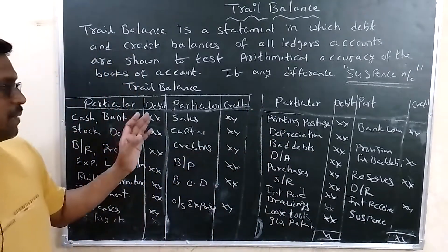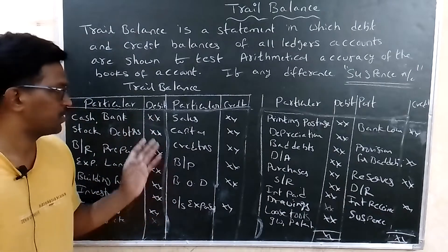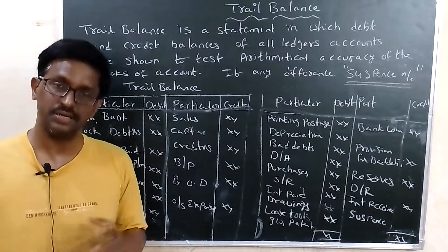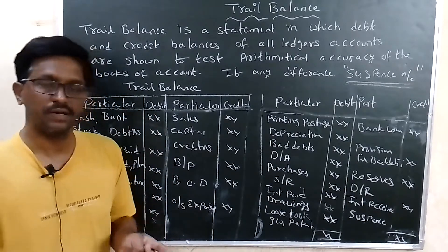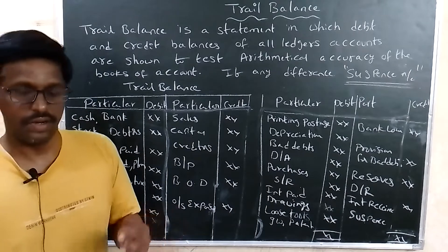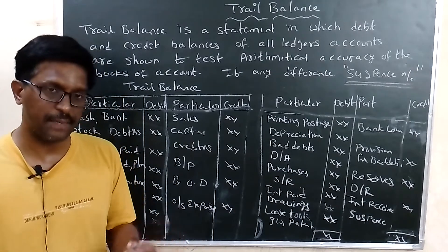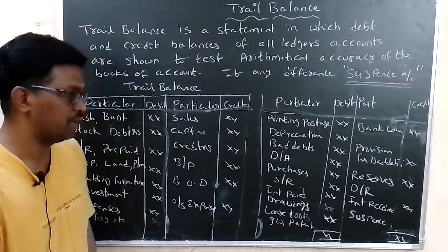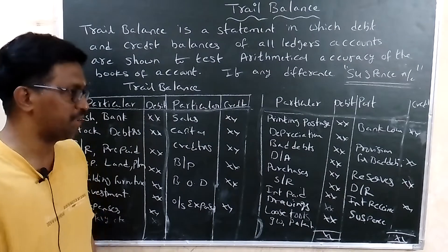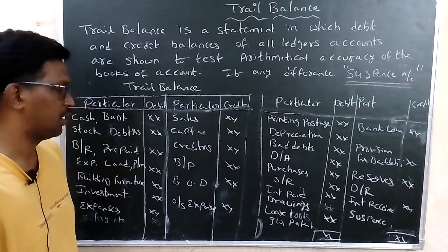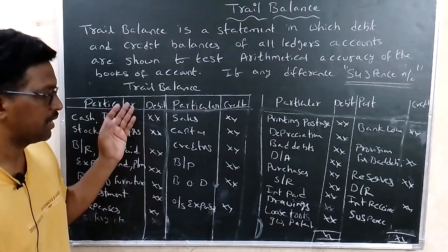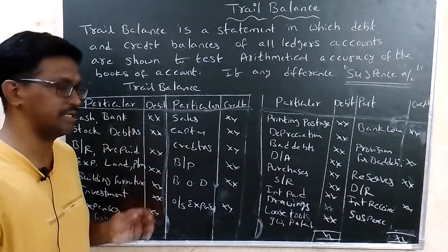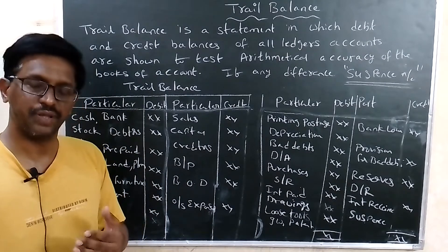Items on the credit side of the trial balance include incomes such as sales, rent received, interest received, commission received, discount received, premium received, and share premium received. All incomes are shown in the credit side. Liabilities like capital are also shown on the credit side.